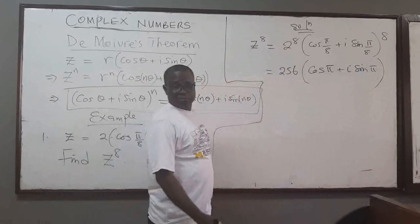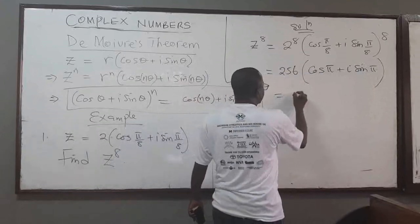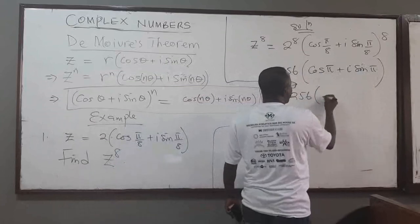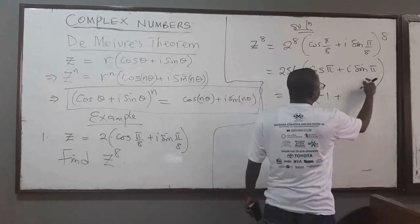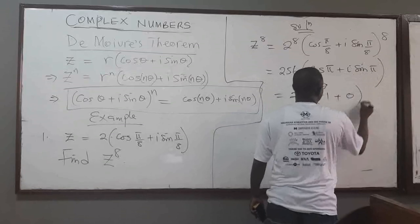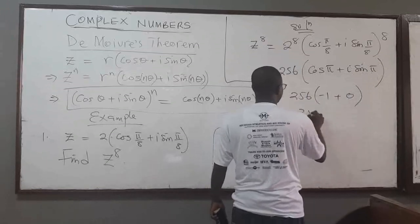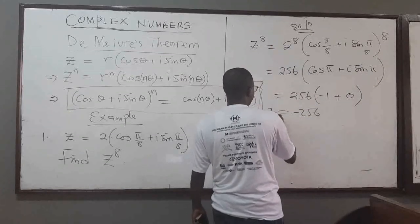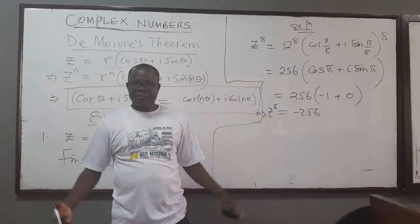We can simplify: 2 to the 8 is 256. Cosine of π is negative 1, and sine of π is 0. So that entire expression is just equal to negative 256. So z to the power 8 is just equal to negative 256. That is how easy it is.